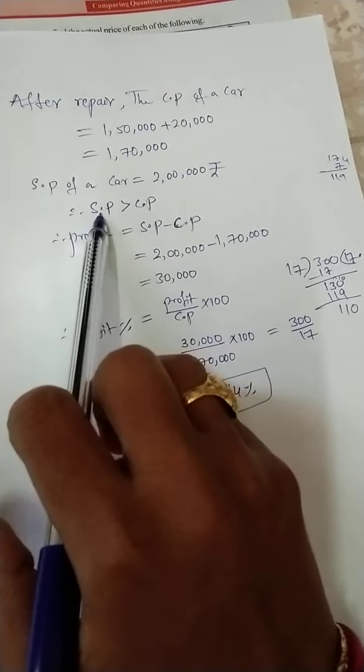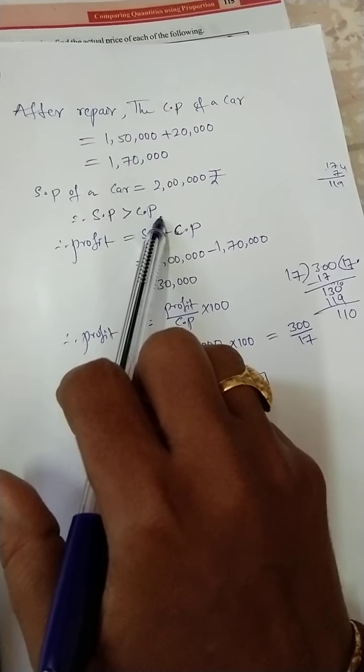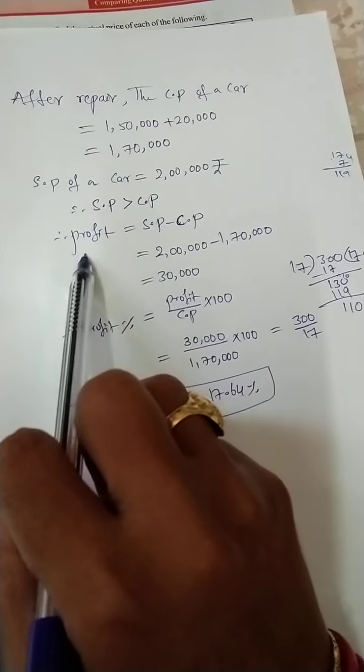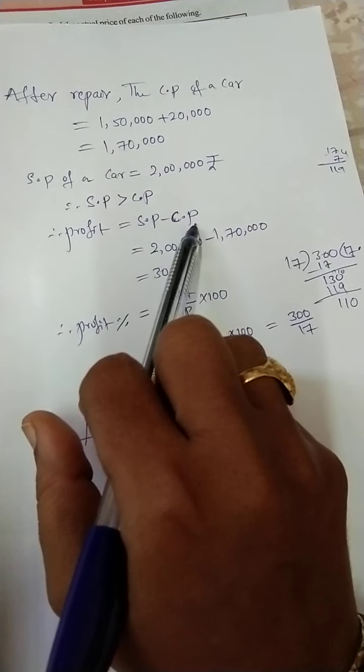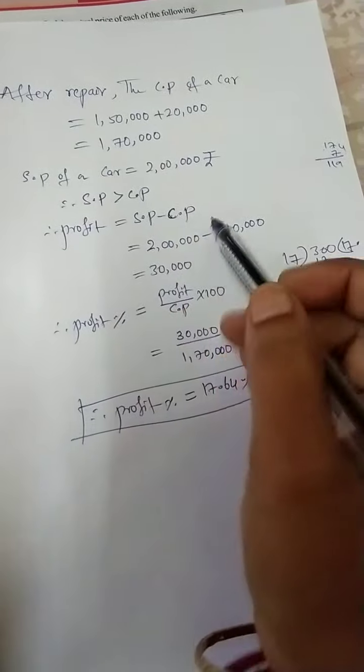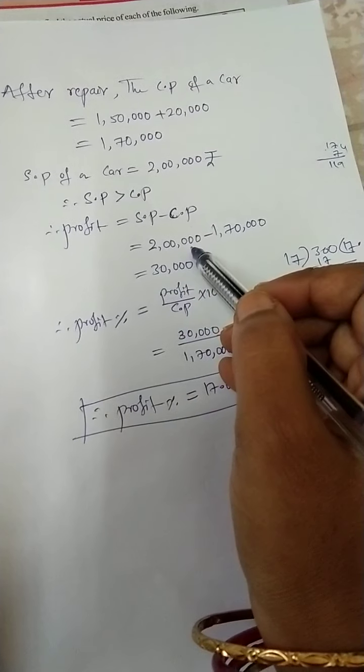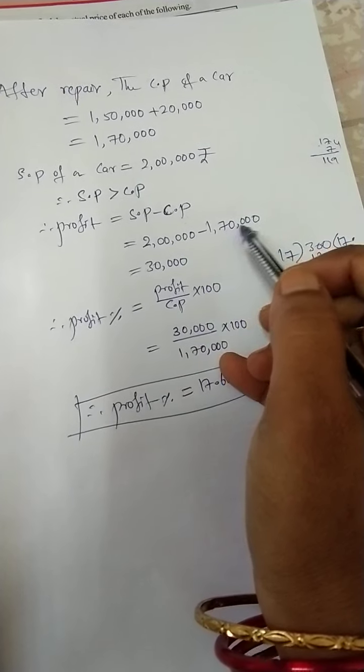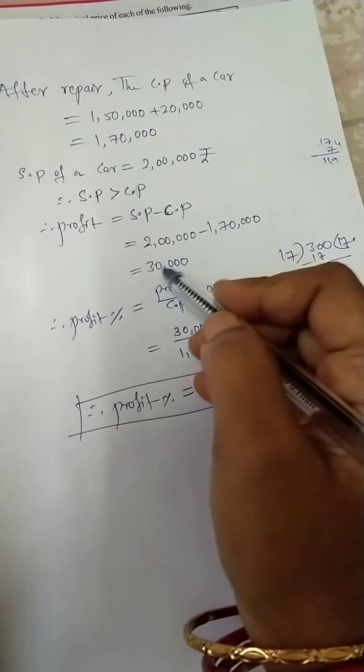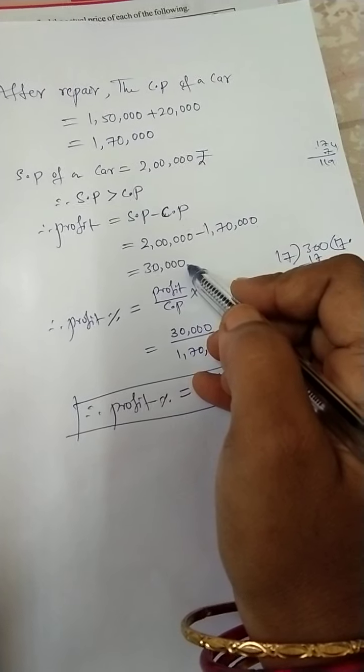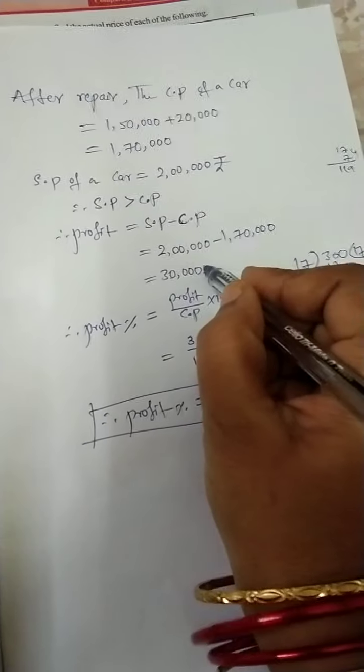So he will get profit only. So that profit is equal to selling price minus cost price. This is the formula you need to remember: selling price 2 lakh rupees minus cost price 1 lakh 70,000 rupees. If you do the subtraction, you will get 30,000 rupees profit.